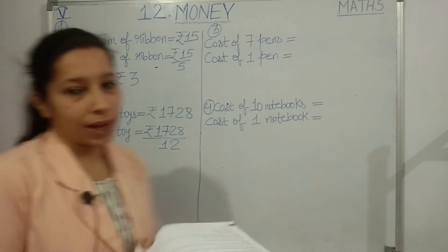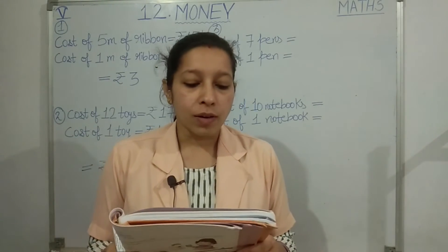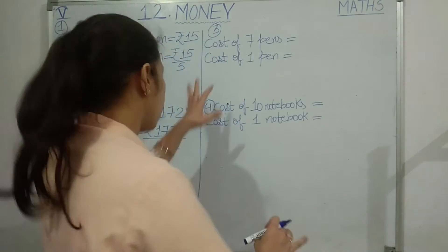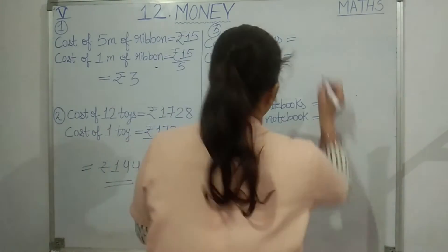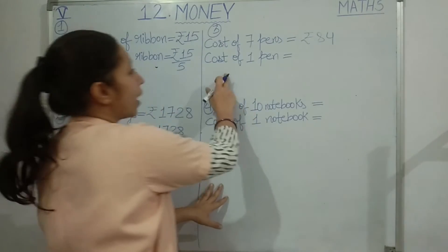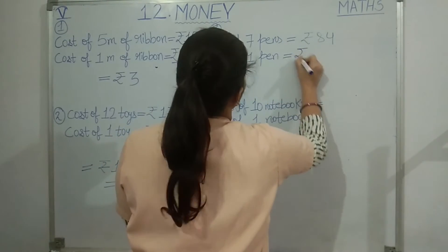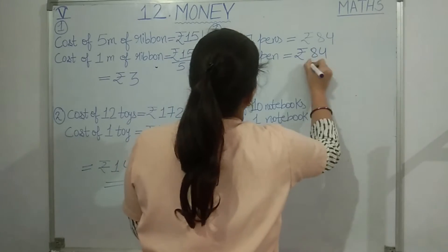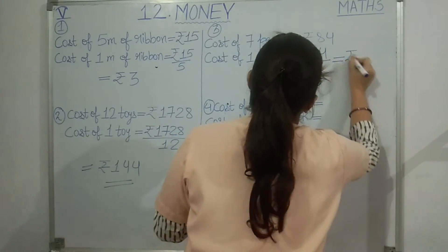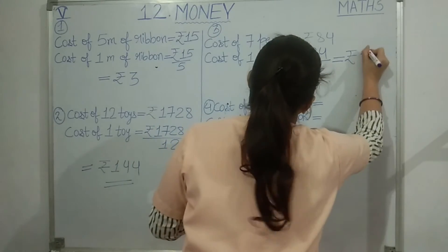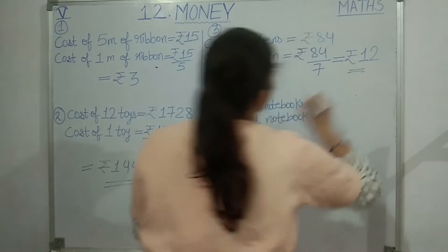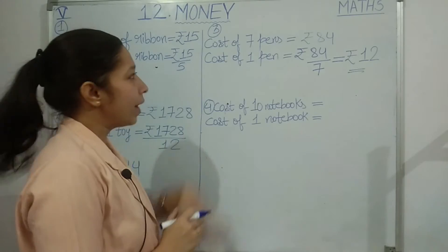Question 3: Seven pens cost rupees 84. Find the cost of one pen. Cost of seven pens is rupees 84, so we divide rupees 84 by 7. Seven ones are 7, one left; 14 divided by 7 - seven twos are 14. So one pen costs rupees 12.